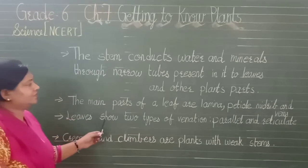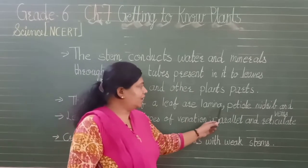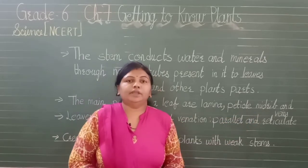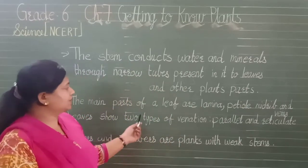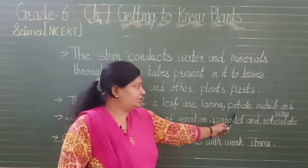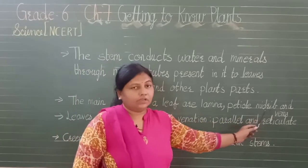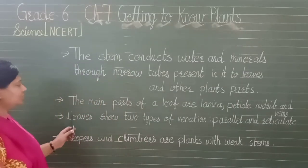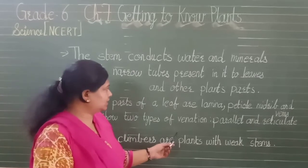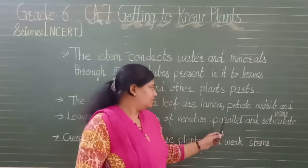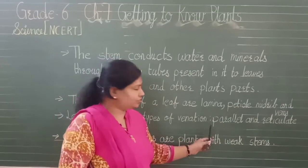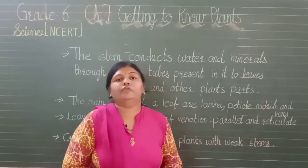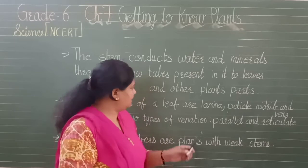The main parts of a leaf are lamina, petiole, midrib and veins. Leaves show two types of venation: parallel and reticulate. Let us study the structure of a leaf with the help of a diagram.